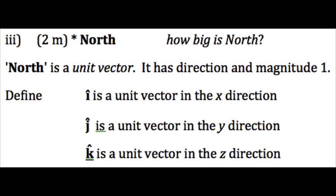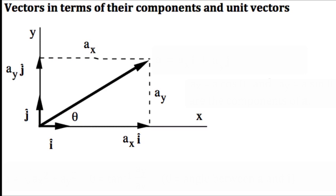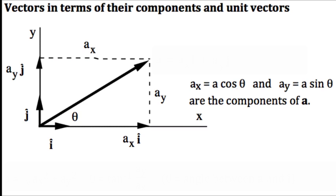So now we can write any vector in terms of its components and unit vectors. a sub x is the component of vector a in the x direction, and a sub x equals a cos theta.